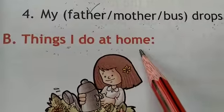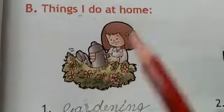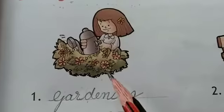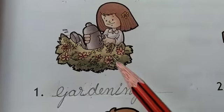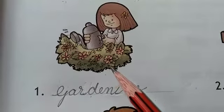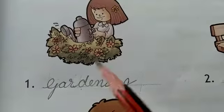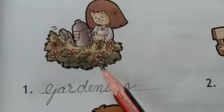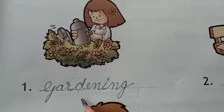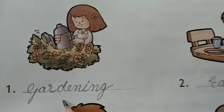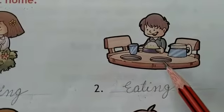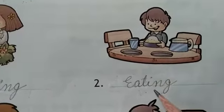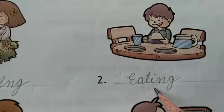Next, read the heading: Things I do at home. First, look at this picture — she is doing gardening. Woh paudon ko paani de rahi hai, so yaha pe hum likhenge: gardening. Look at this picture — what is he doing? He is eating the meal. So yaha pe hum likhenge: eating. Woh khaana kha raha hai.